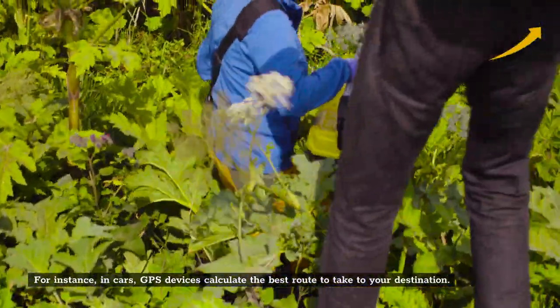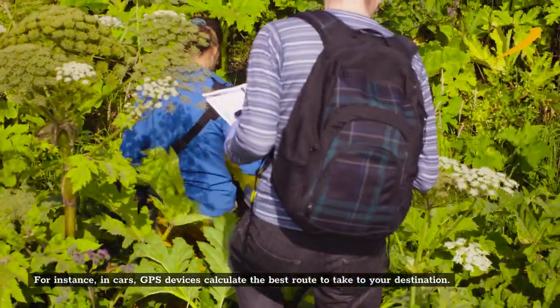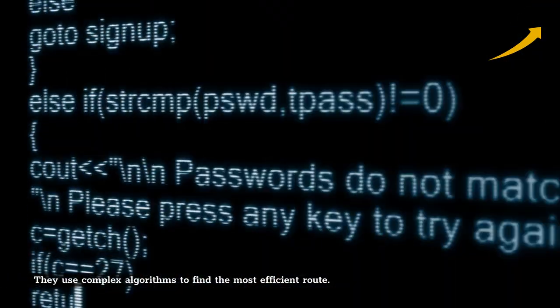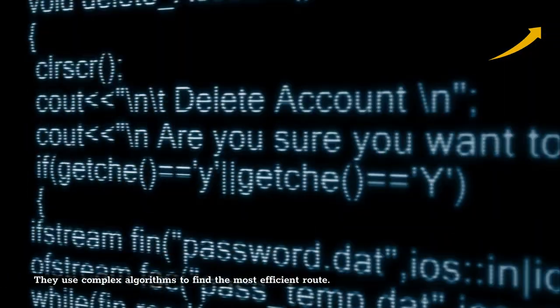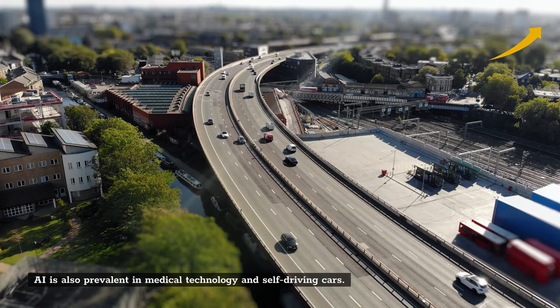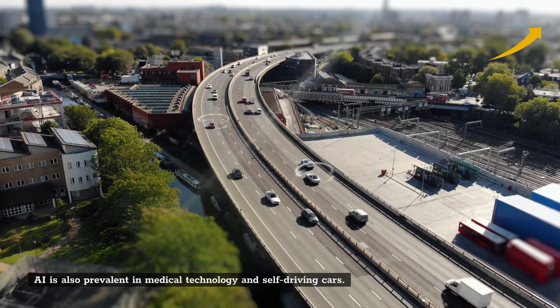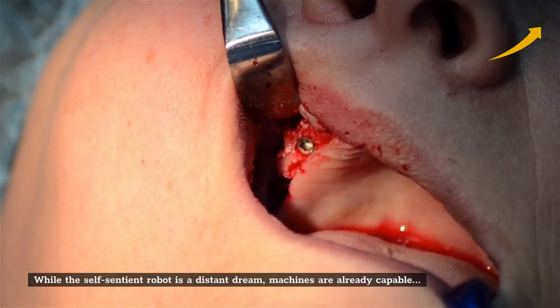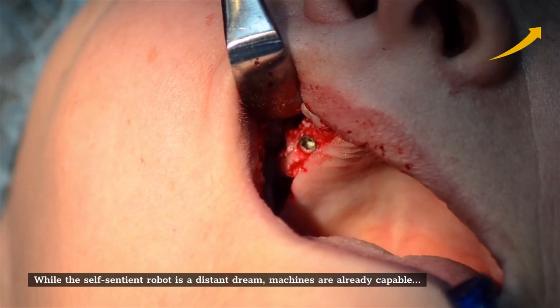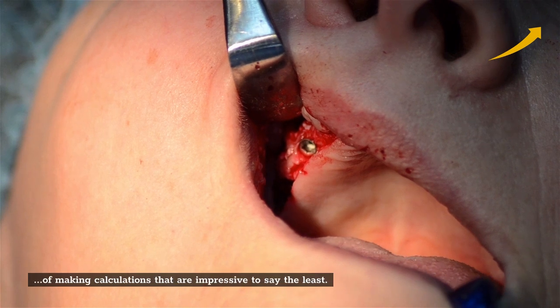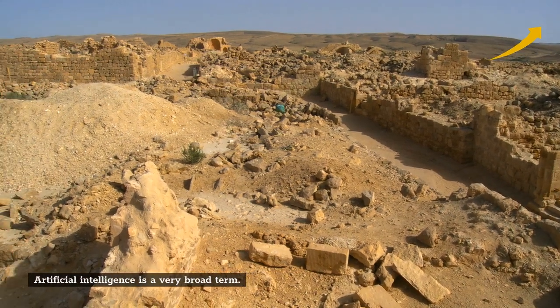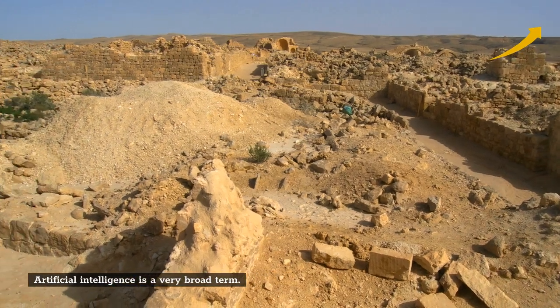For instance, in cars, GPS devices calculate the best route to take to your destination. They use complex algorithms to find the most efficient route. AI is also prevalent in medical technology and self-driving cars. While the self-sentient robot is a distant dream, machines are already capable of making calculations that are impressive to say the least. Artificial intelligence is a very broad term.